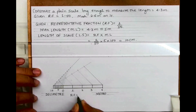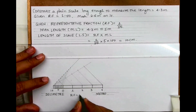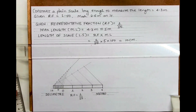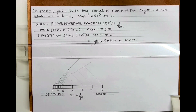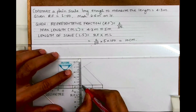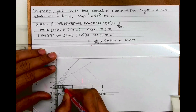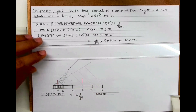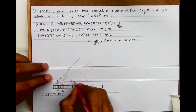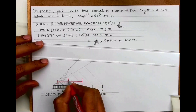Here we write the RF which is 1 upon 50. Now we need to show 2.6 meters on the scale. We take 2 from the right side and 6 from the left side, so this will represent 2.6 meters.